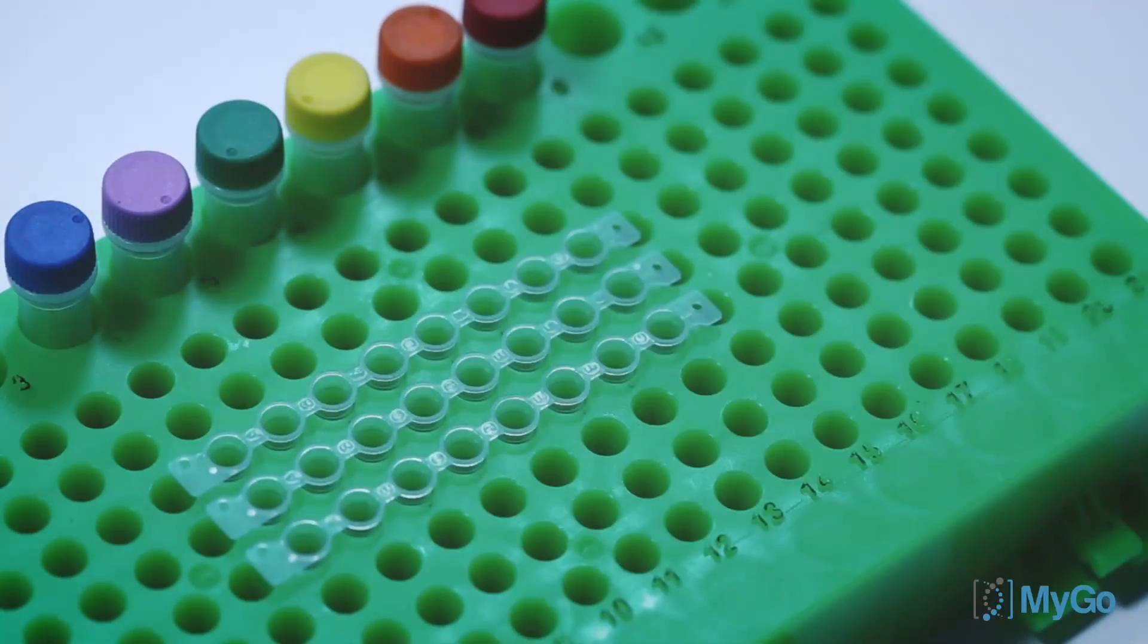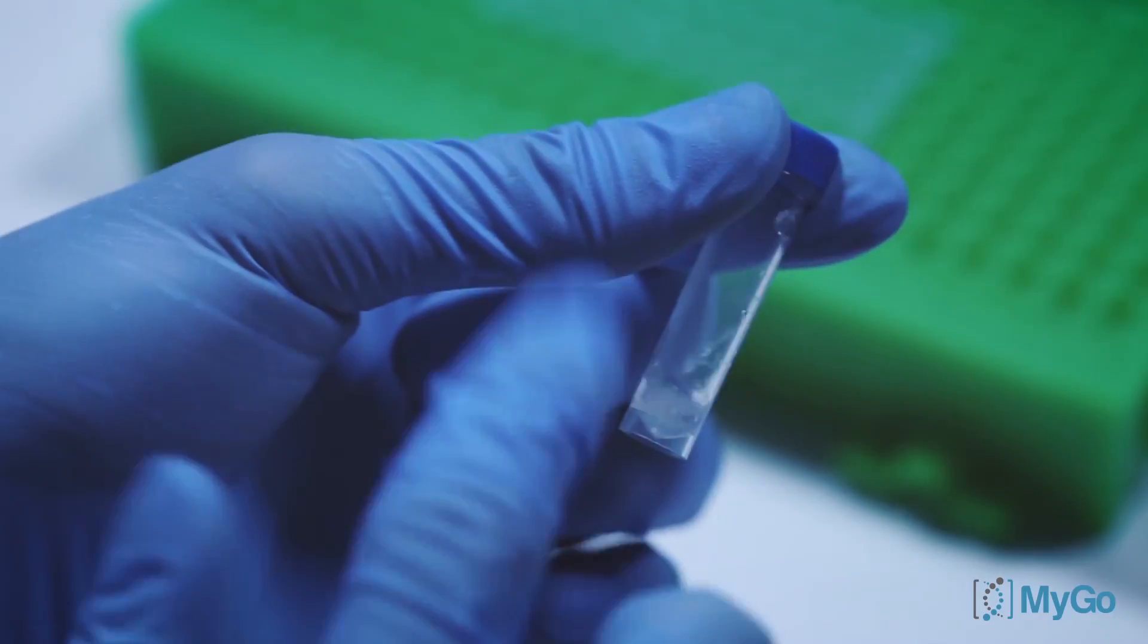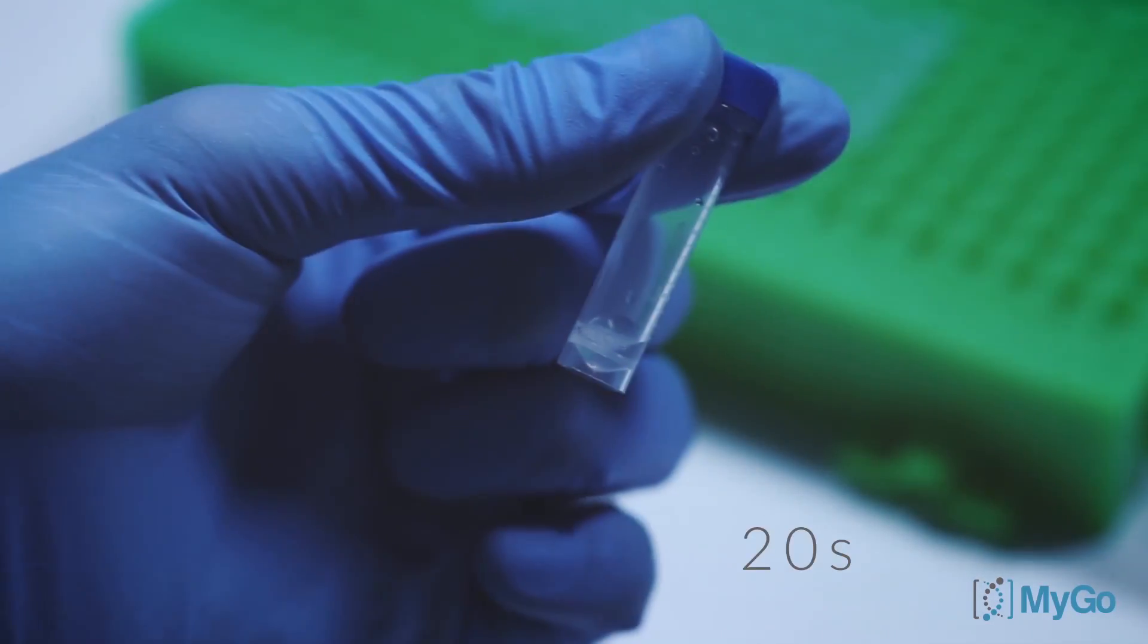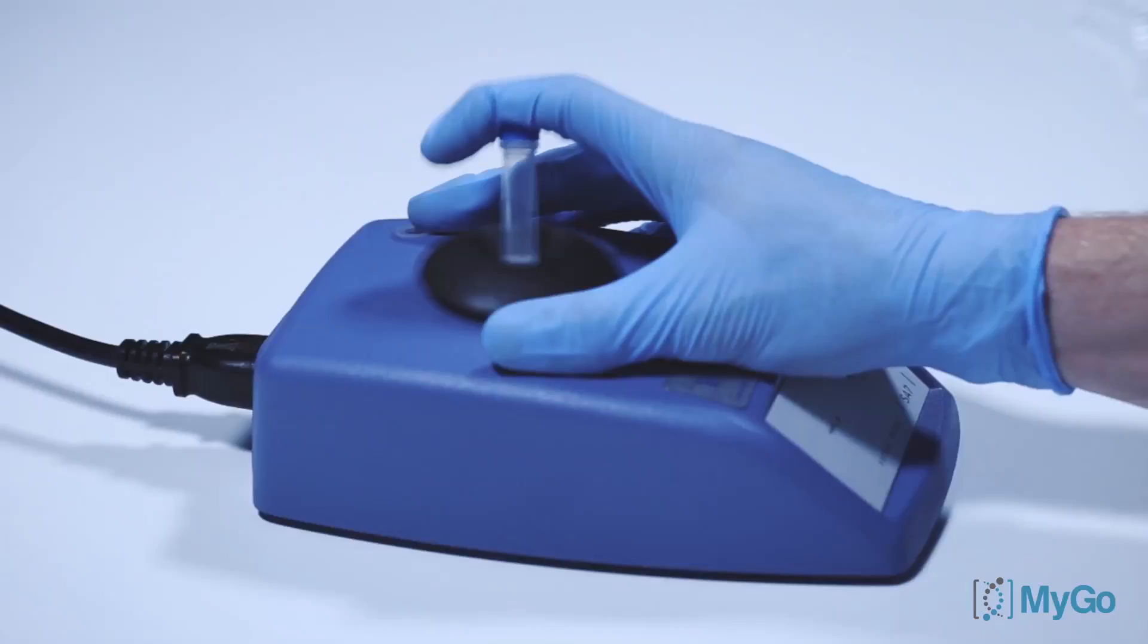Now we'll need to mix the tubes thoroughly. We would recommend mixing the tubes like this for at least 20 seconds, vortexing them and then centrifuging them down. It's important that these tubes are mixed very well after settling.